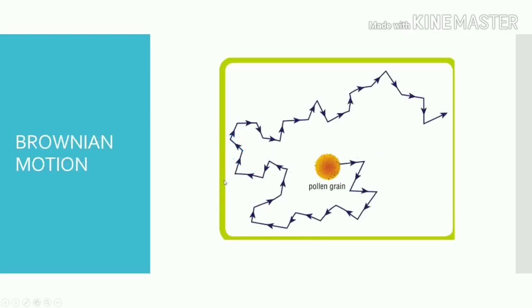So the Brownian motion basically demonstrates the random movement of particles. A scientist was taking a look at a pollen grain, and he found that, well the pollen grain was floating on top of water basically, and he found that at a microscopic level the pollen grain was constantly moving in a random fashion. So this depicts the pathway of the pollen grain. You can see that it's quite random and it's always moving.